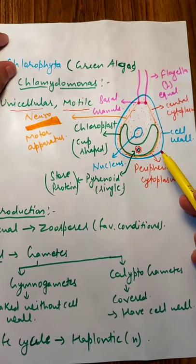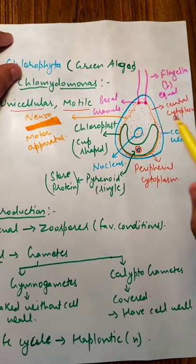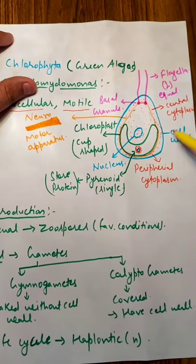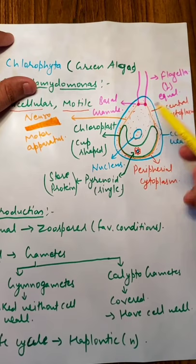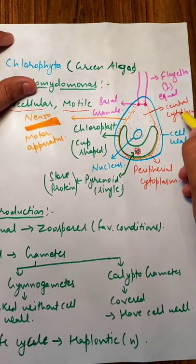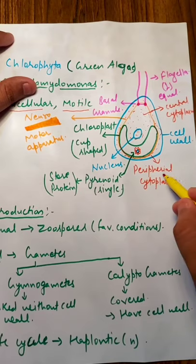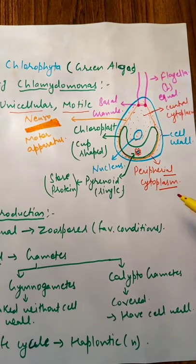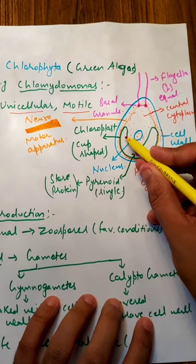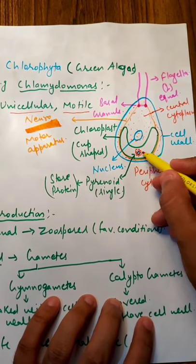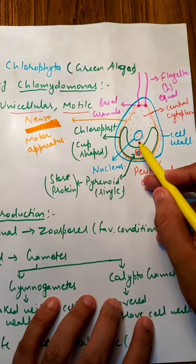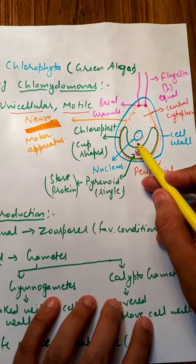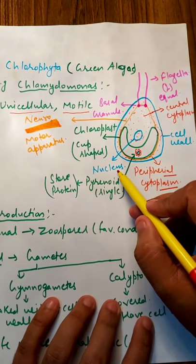Here is the structure of Chlamydomonas. Chlamydomonas में सबसे बाहर एक cell wall होगी। Cell wall के अंदर cytoplasm होगा — center के अंदर जो cytoplasm है वो central cytoplasm कहलाता है और जो periphery पे present है वो peripheral cytoplasm। Chlamydomonas के अंदर cup shape में chloroplast होता है बड़े size में। Cup का जो depression है, उसके center में इस Chlamydomonas cell का nucleus present रहता है।